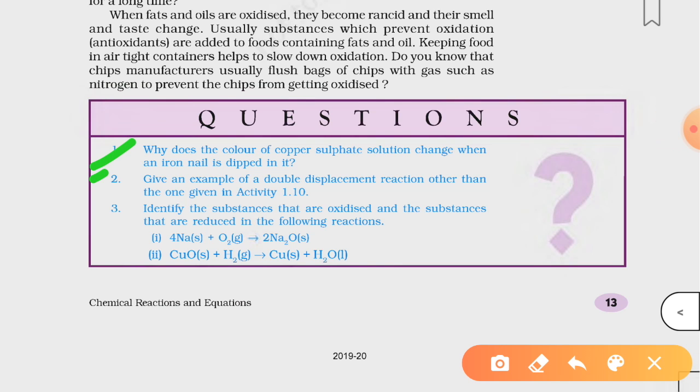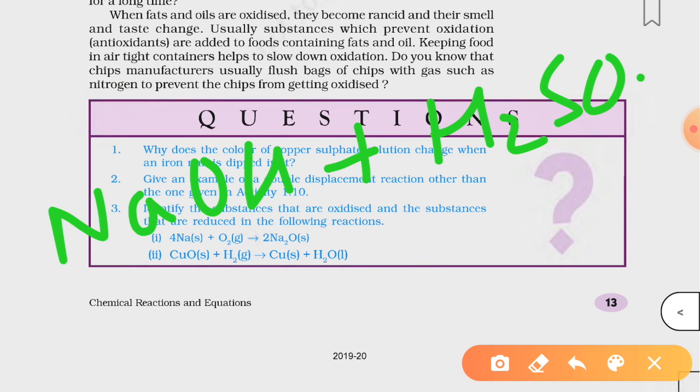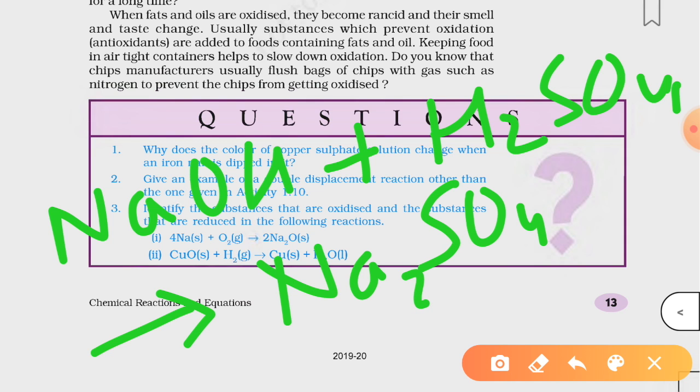Second one, give an example of double displacement reaction other than one given in activity 1.10. Okay, we can tell any example of double displacement reaction. For example, reaction of NaOH, which is sodium hydroxide, with H2SO4, which is sulfuric acid. When sodium hydroxide reacts with sulfuric acid, it will form a salt which is Na2SO4, sodium sulfate, and water.